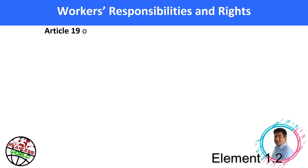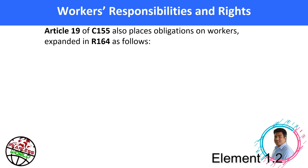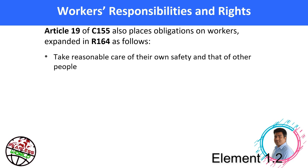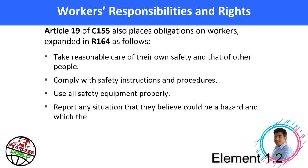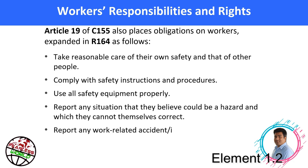As per Article 19 of C-155, obligations and rights are also placed on workers, expanded in R-164 as follows: take reasonable care of their own safety and that of other people; comply with safety instructions and procedures; use all safety equipment properly; report any situation they believe could be a hazard and which they cannot themselves correct; and report any work-related accident or ill health.